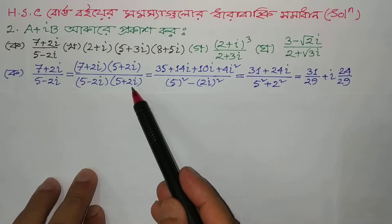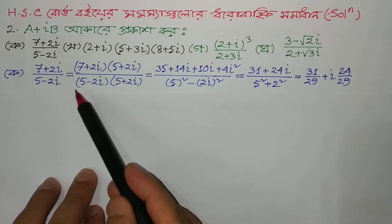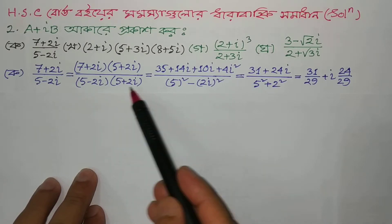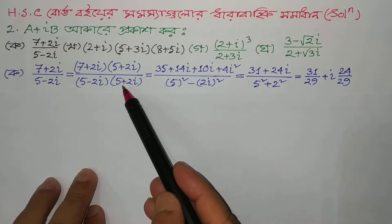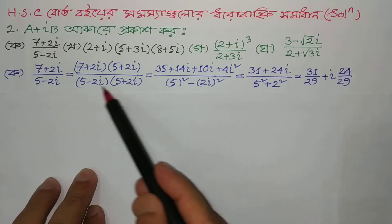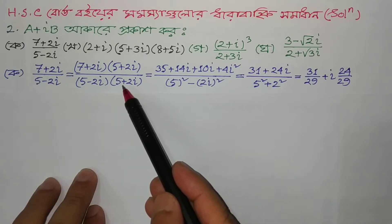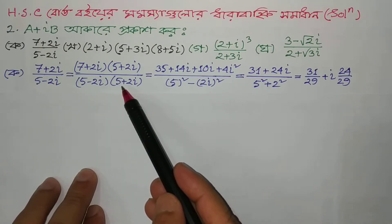It is very simple. We know that two complex numbers that are conjugates of each other — when we take their product, it becomes very simple and can be written in one line.